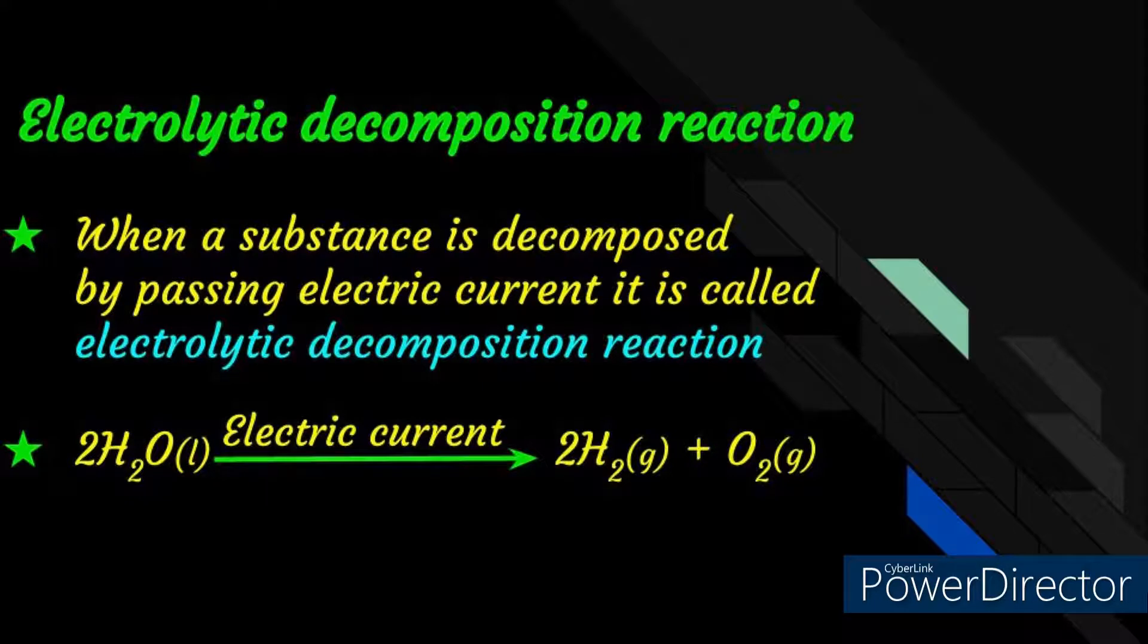The second type of decomposition reaction is electrolytic decomposition reaction. When a substance is decomposed by passing electric current, it is called electrolytic decomposition reaction. The example for this is 2H2O gives rise to 2H2 plus O2 in the presence of electric current.